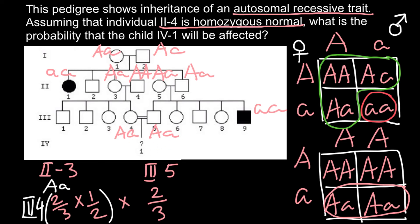But this is not our final calculation, because even if both parents are heterozygous, it doesn't mean the child will automatically be affected. The probability for two heterozygous parents to have an affected child is 1/4. So we also multiply by 1/4 to account for the probability of individual 4,1 being homozygous recessive.